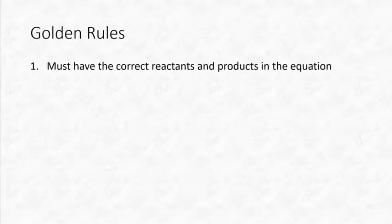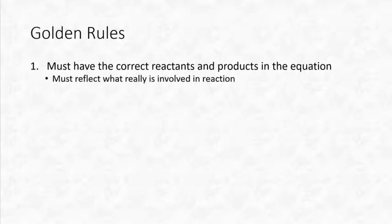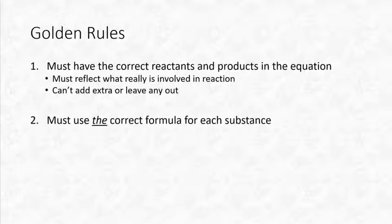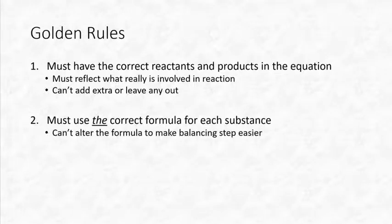Remember the golden rules. Firstly, we must have the correct reactants and products in the equation. Our equation must reflect what's really involved in the reaction — we can't add extra things or leave anything out. We must use the correct formula for each substance; we can't alter the formula to make the balancing step easier.